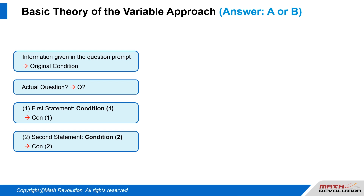The variable approach has played an important role in improving students' GMAT scores by 100 points. We now want to pass this method on to the rest of the world.